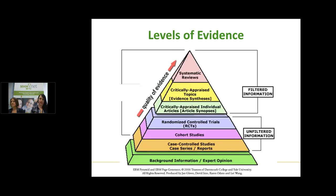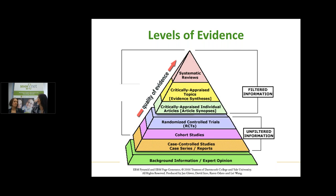Returning to the evidence-based pyramid, there's background information and expert opinion, which does still matter — it's important to have this background learning within your own understanding. Then we see unfiltered information: individual studies, the top of which are randomized controlled trials. And then we have filtered information, which are syntheses of various studies — putting them together and asking, consistently, what are we finding? Systematic reviews are the top of that filtered information category.